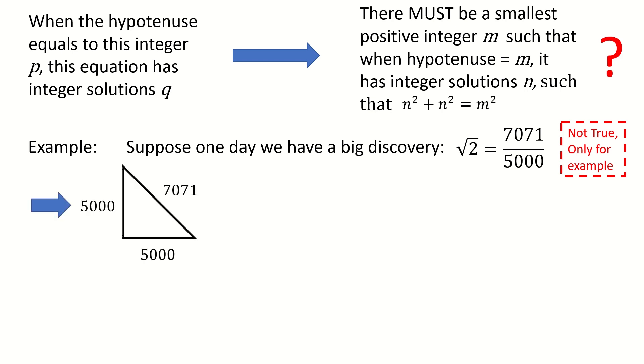Then we can construct this right-angle triangle here. So at least for this integer p equals 7071, this equation holds.